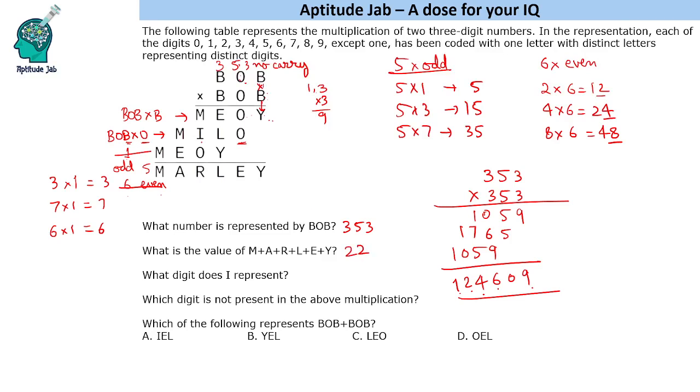I represents, I is MILO the second one that is seven. Which digit is not present in the above multiplication? So zero is present.